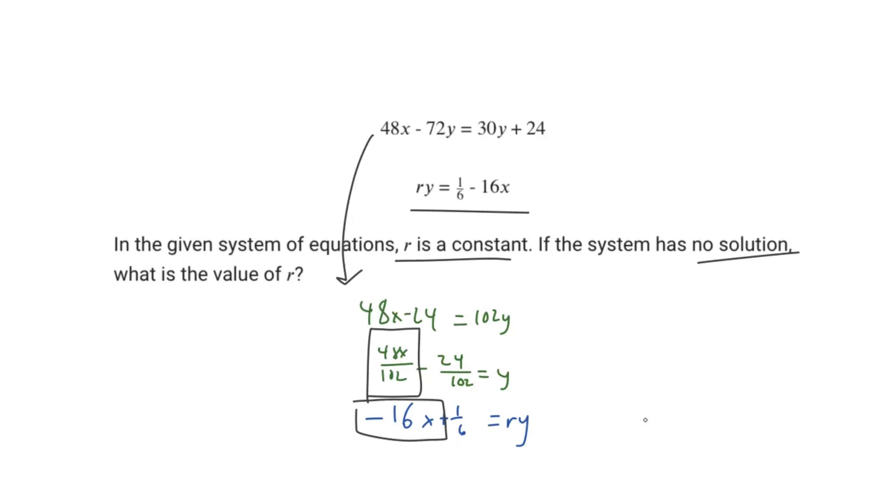And how do you get parallel lines? Well, you need the exact same slope but different y-intercepts. So you can see here that they have different y-intercepts, but they need the same slope, which they currently don't have. But we can give them the same slope by changing r to the correct value.